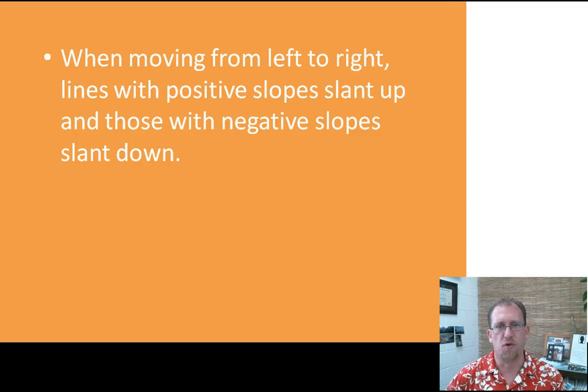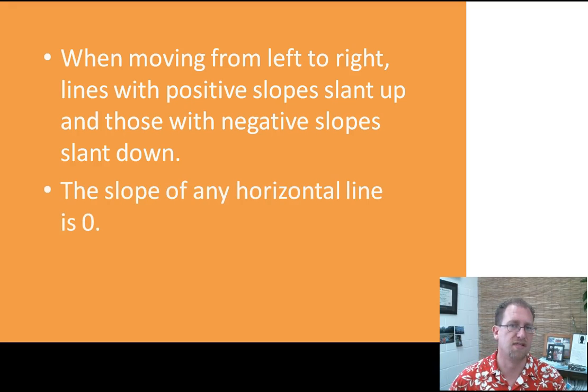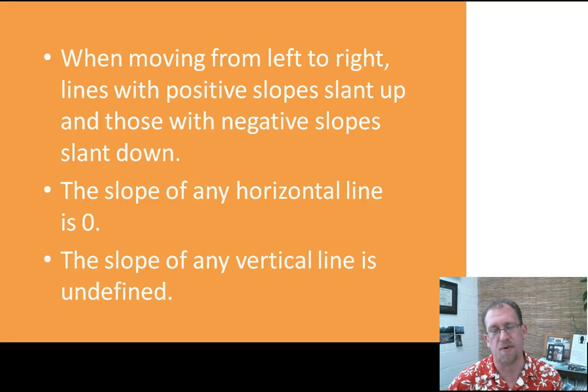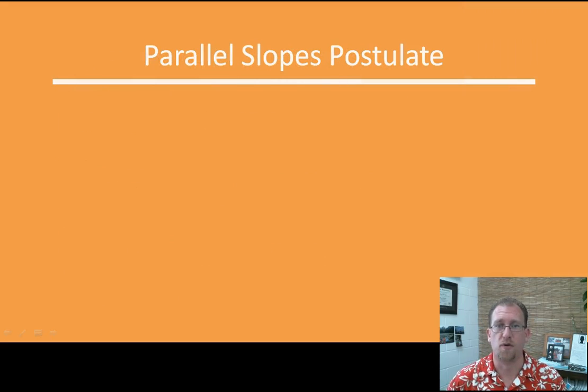We always want to look at slopes going from left to right, as if you are reading the page. If it has a positive slope, it's going up as you move from left to right. If it's going down as you move from left to right, it's got a negative slope. The slope of any horizontal line is 0 because it doesn't go up or down. The slope of a vertical line is undefined because there is no run for its rise, you can't divide by 0.